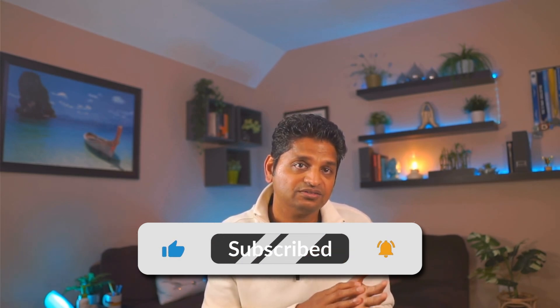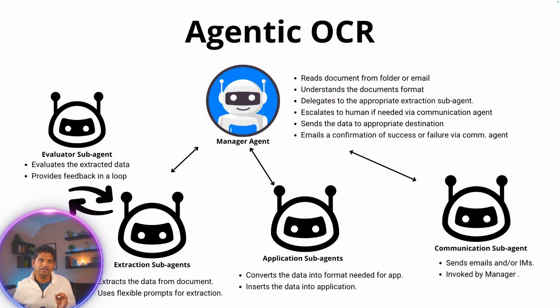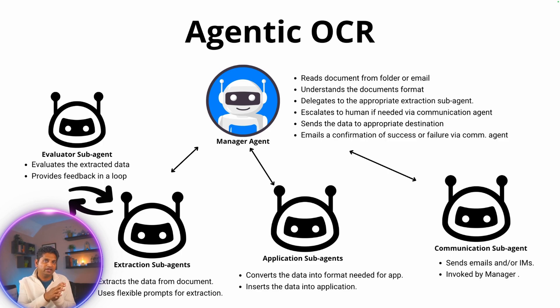At its heart, agentic OCR unleashes AI agents to extract data. I've broken down AI agents in depth before — I'll drop a link in the description. This system works through a team of specialized agents. We have a manager agent that reads incoming documents from a folder or email, understands the format — whether it's an invoice or a purchase order — and delegates to the specialized extraction agent that handles that particular format.